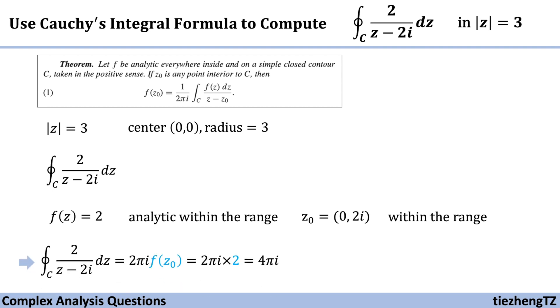So integral 2 over z minus 2i dz equals 2 pi i times f(z0). And we know f(z0) is 2. So the final result is 2 pi i times 2, which is 4 pi i. And this is the result for this question.